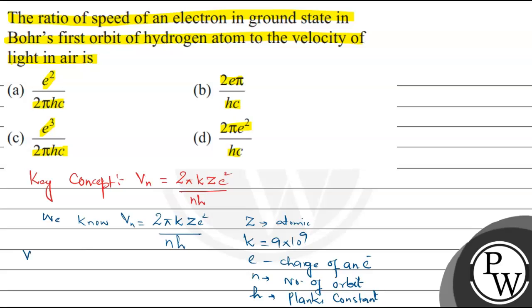We know velocity of light, which we denote as c, is 3×10⁸ meters per second. The question asks for the ratio of speed of electron in ground state.